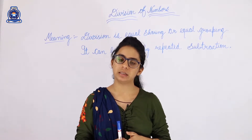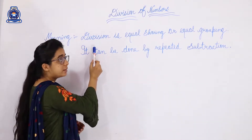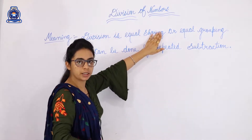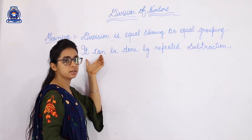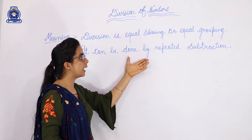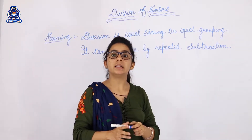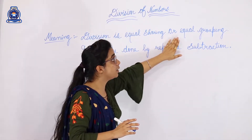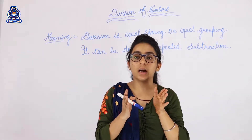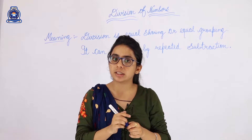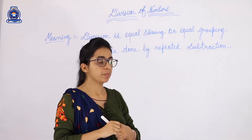Let's start with the meaning of division. Division is equal sharing or equal grouping of things. It can also be done by repeated subtraction. The sharing or grouping of things must be equal.